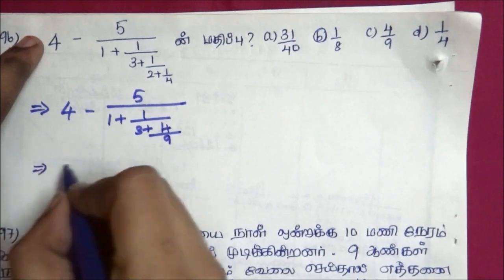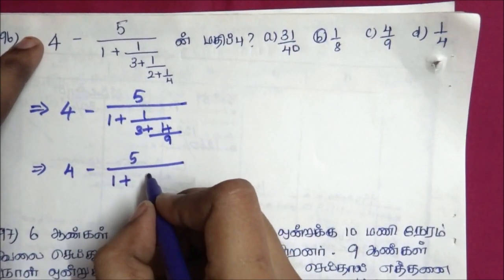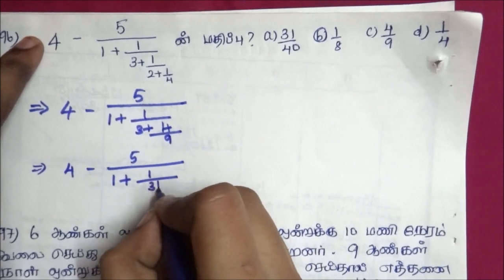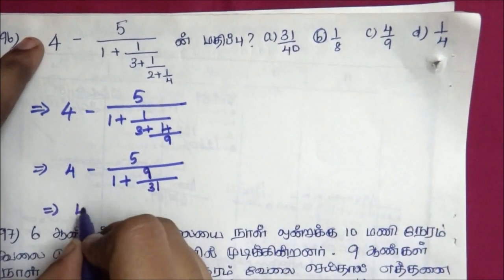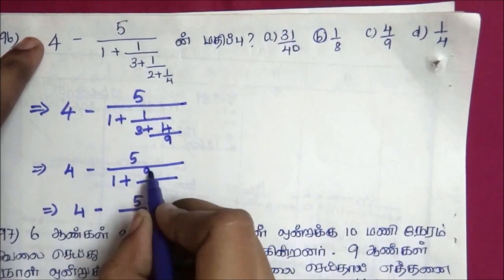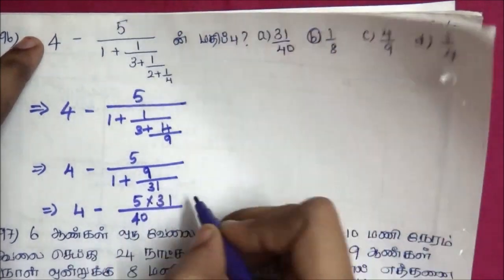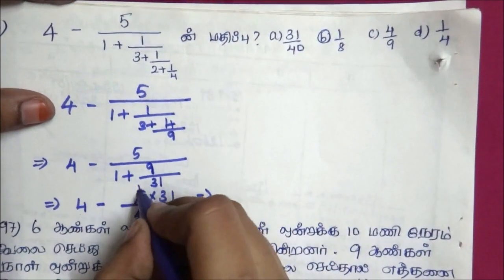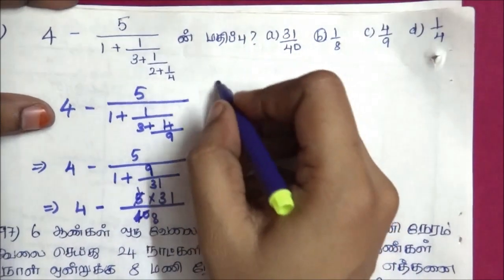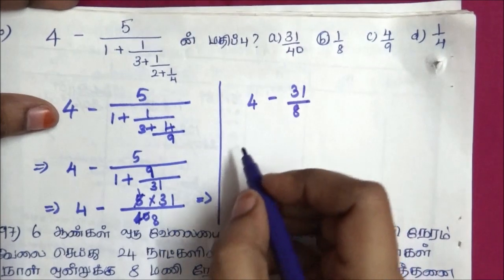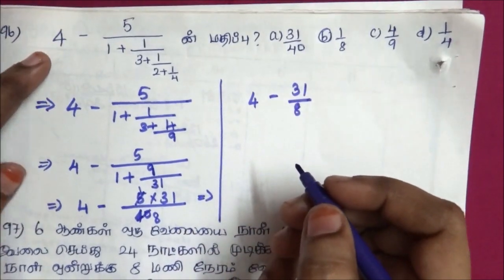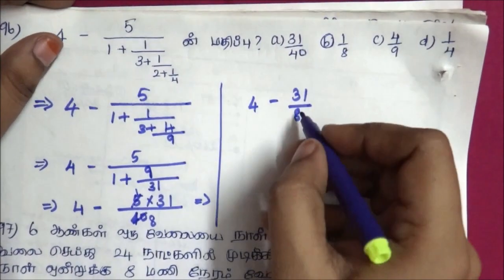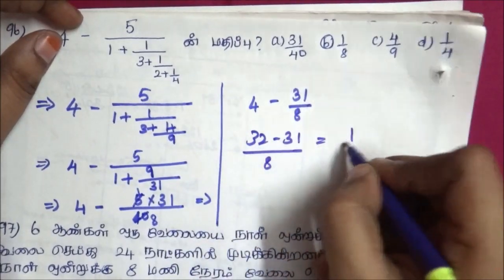Fantasy value is 0.745. We have 4 minus 5 divided by 1 plus 1 by 9. So 9 into 3 is 27, plus 4 is 31, giving 31 divided by 9. So 9 is above, and we simplify 4 minus 5 divided by 31: that is 40 divided by 31. Then simplify 4 minus 31 divided by 8, giving 32 minus 31 divided by 8, which is 1 by 8. The answer is 1/8.